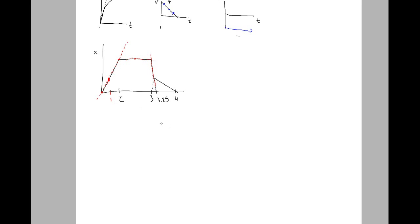The five most important words: slope of the tangent line. That is your bread and butter. Anytime you see a graph, you need to immediately be thinking: what is the slope of the tangent line?